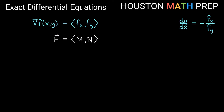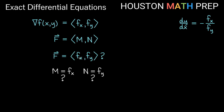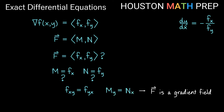One thing you might ask about a vector field is whether it is the gradient of some function — in other words, is M equal to partial fx and is N equal to partial fy for that same function? To know if that's true, we think about mixed partial second derivatives. The mixed partials should be equal as long as the function is continuous and well-behaved on some region. So partial fx differentiated with respect to y gives fxy, and partial fy differentiated with respect to x gives fyx, and those should be equal. So if the partial derivative of M with respect to y equals the partial derivative of N with respect to x, then the vector field is a gradient field.